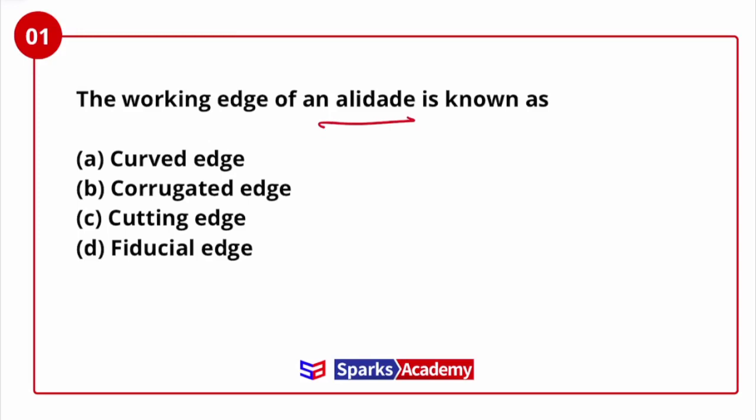Alidade is used with the plane table. Various instruments are used with the plane table, like the plane table board, then Alidade, spirit level, plumb bob, and other instruments. Alidade is a sighting instrument.